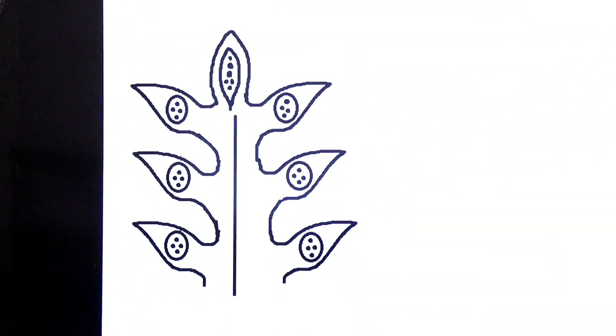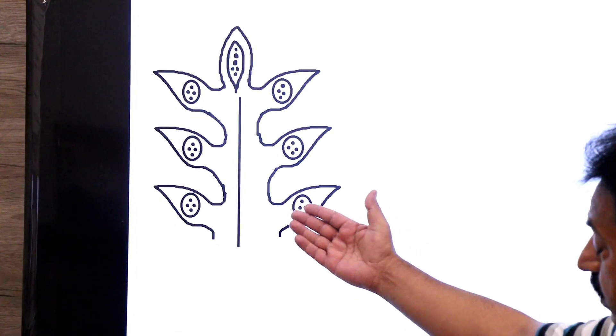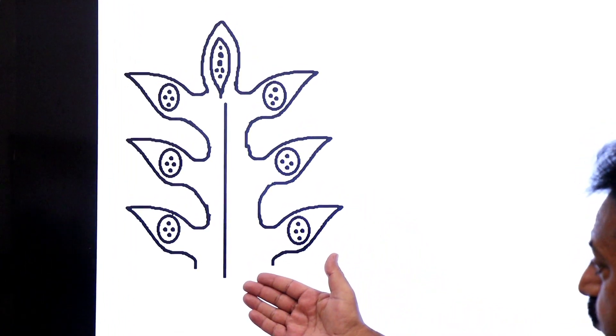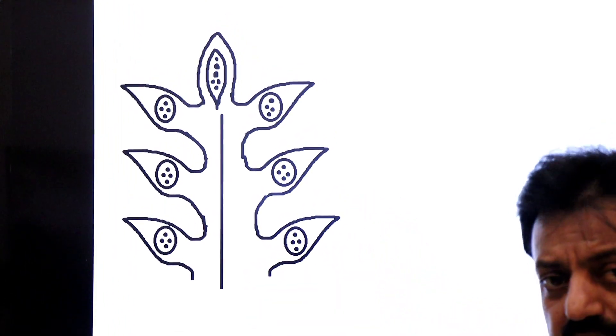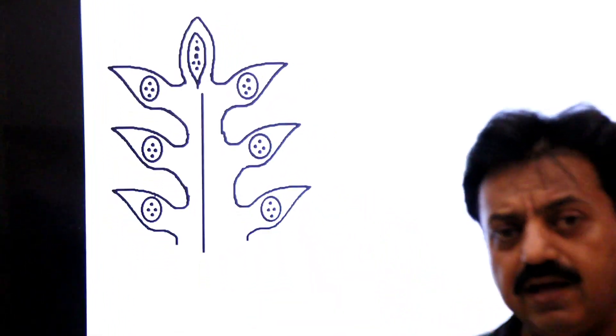Now we come to the male cone. The male cone is the aggregation of microsporophylls. Microsporophylls are modified leaves containing microsporangia.